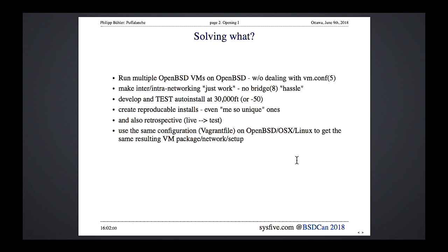The effort here was to integrate OpenBSD's VMM framework — notably VMD — into Vagrant, so we can use Vagrant on OpenBSD like it's possible on Linux. That means running many puffy instances on your machine without the hassle of creating vm.conf, setting up bridges, configuring pf.conf, and all that.